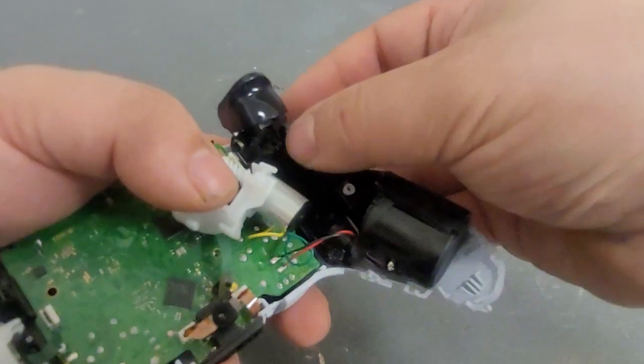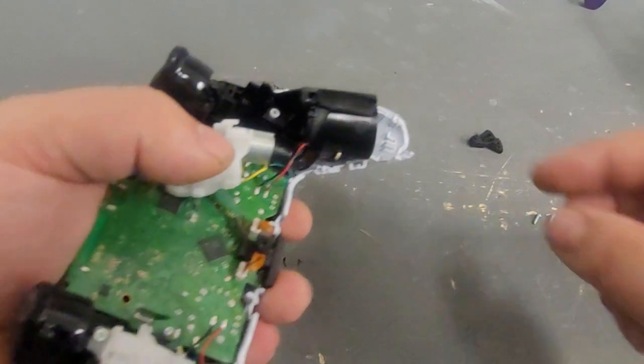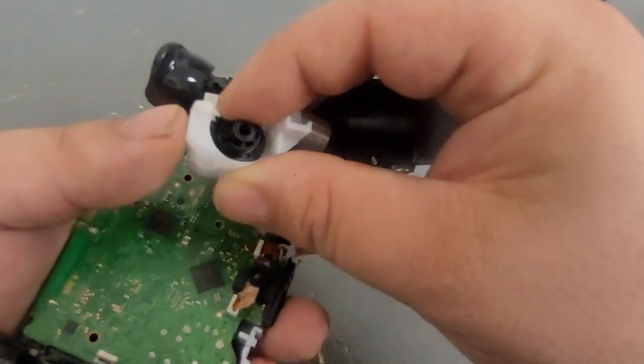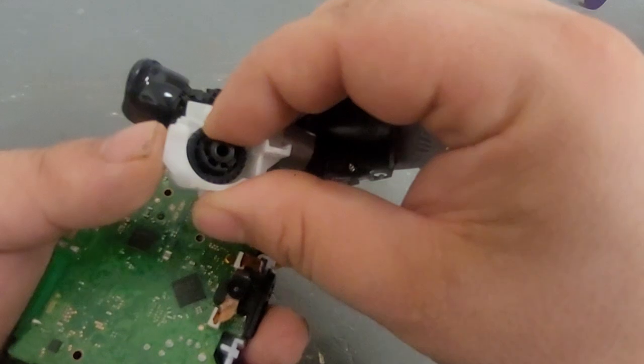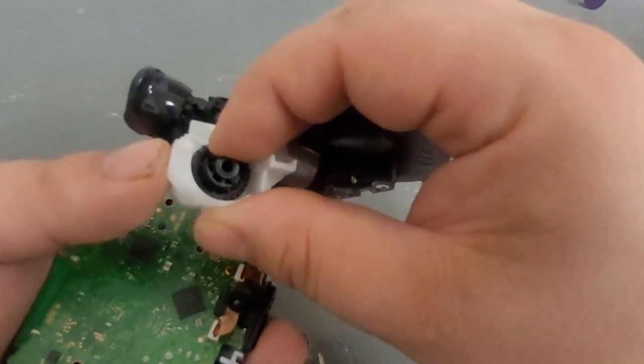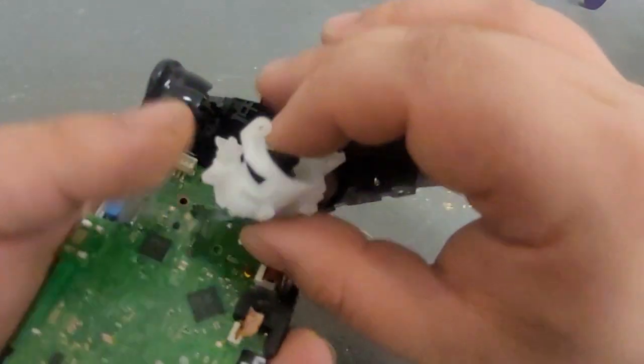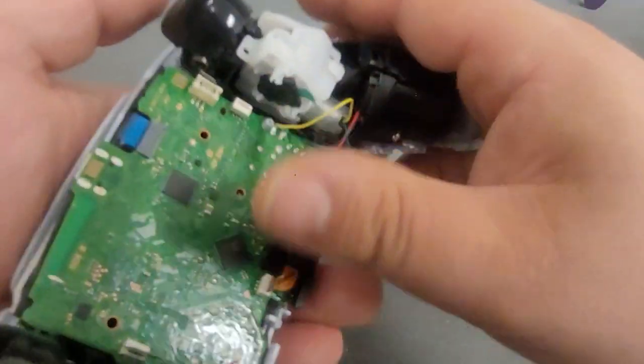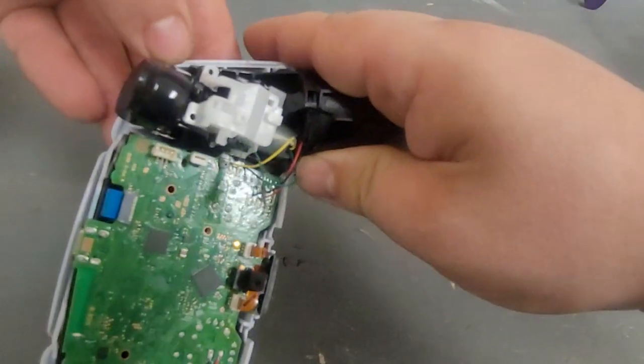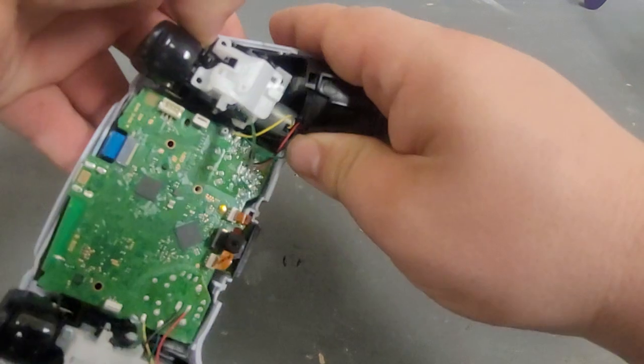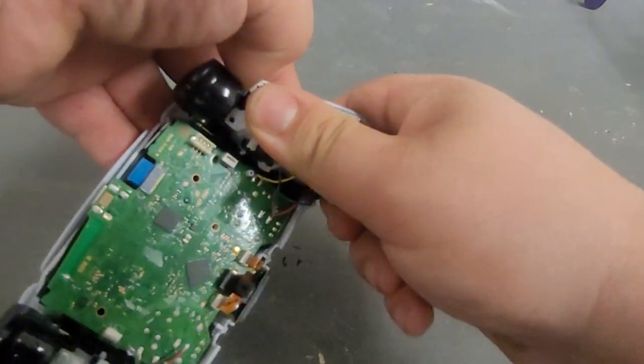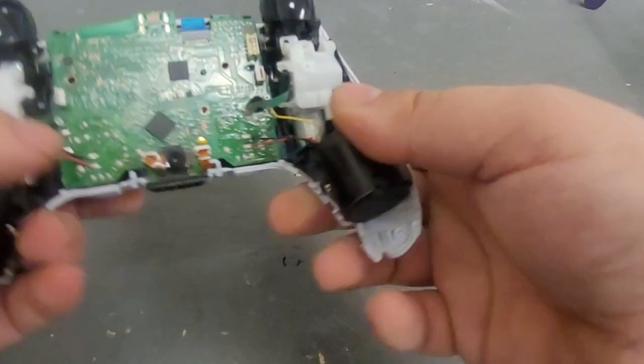So you put that in, put that all the way down. Then you want to take this and rotate it all the way down until it doesn't go anymore. And I always put my thumb over the gear right there, and it just snaps back into place.